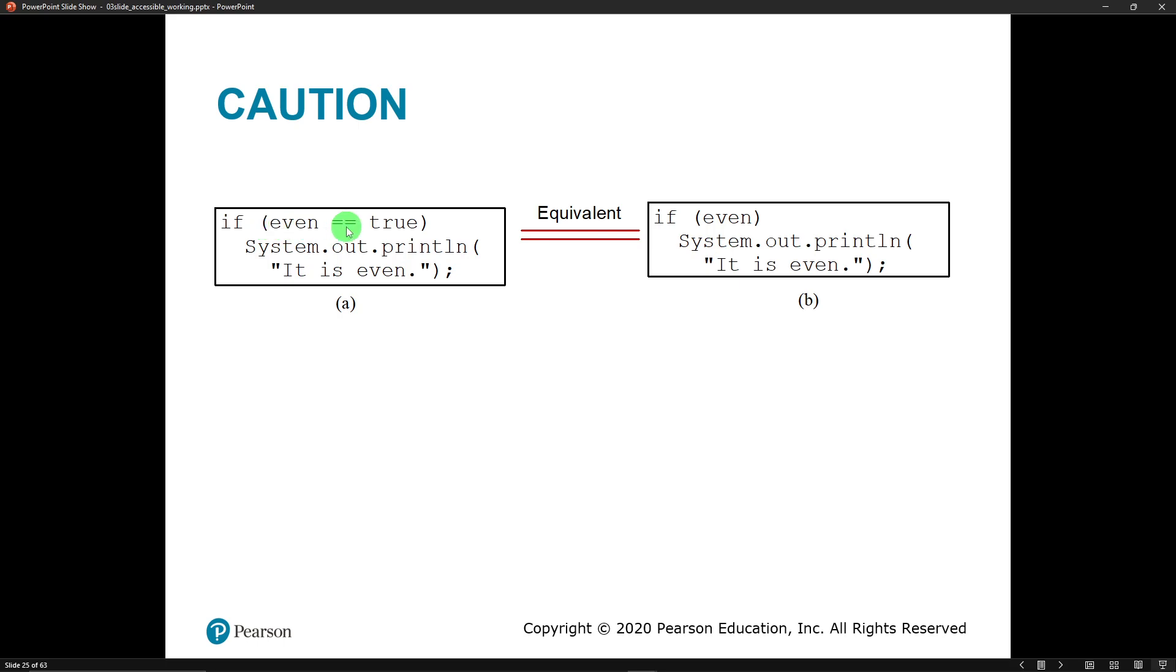But we don't have to because it already is true or false. So we can just as easily say: if even, because even is already true or false. I don't have to compare it to see if it's true or false. So even is true, true equals equals true, yes it does, true equals true, so we'll print out it's even. But this is just as valid: if even, is even true? It certainly is.